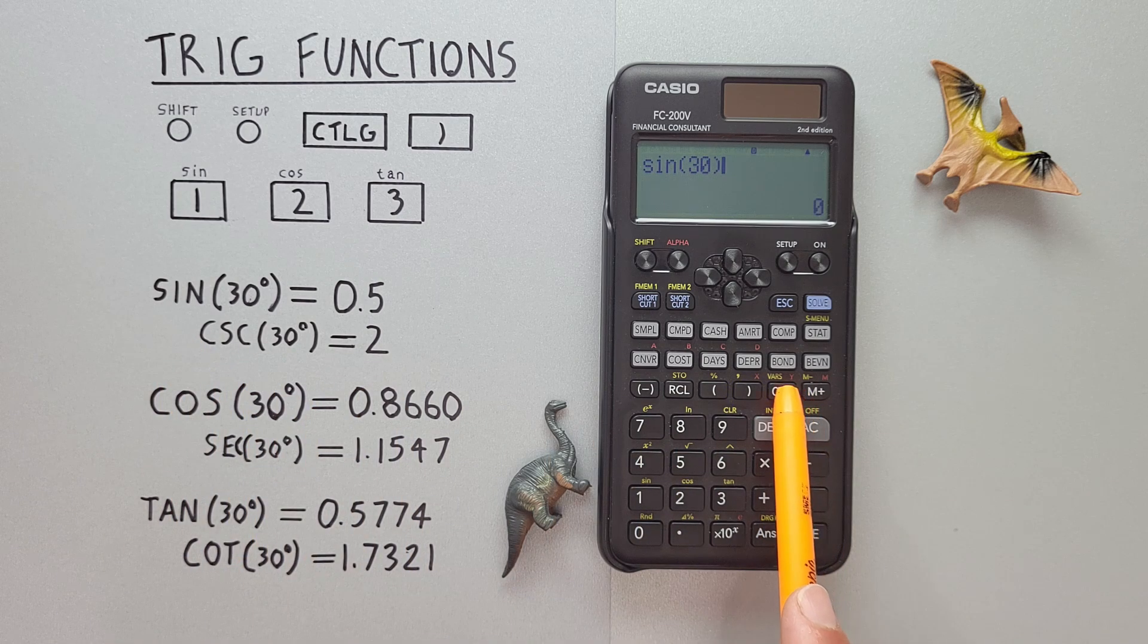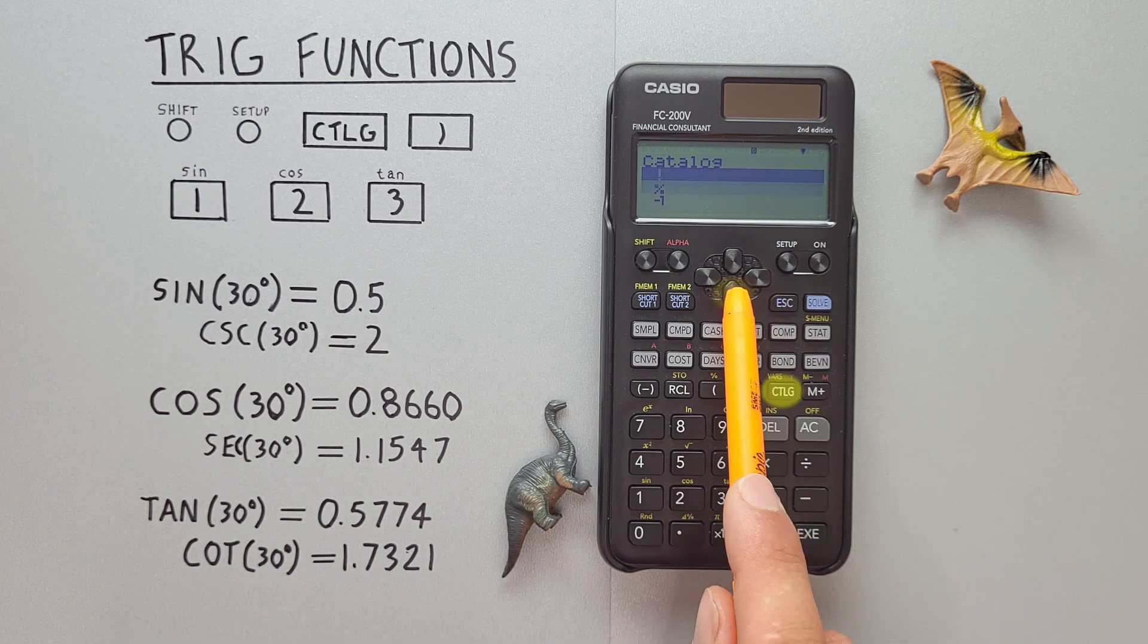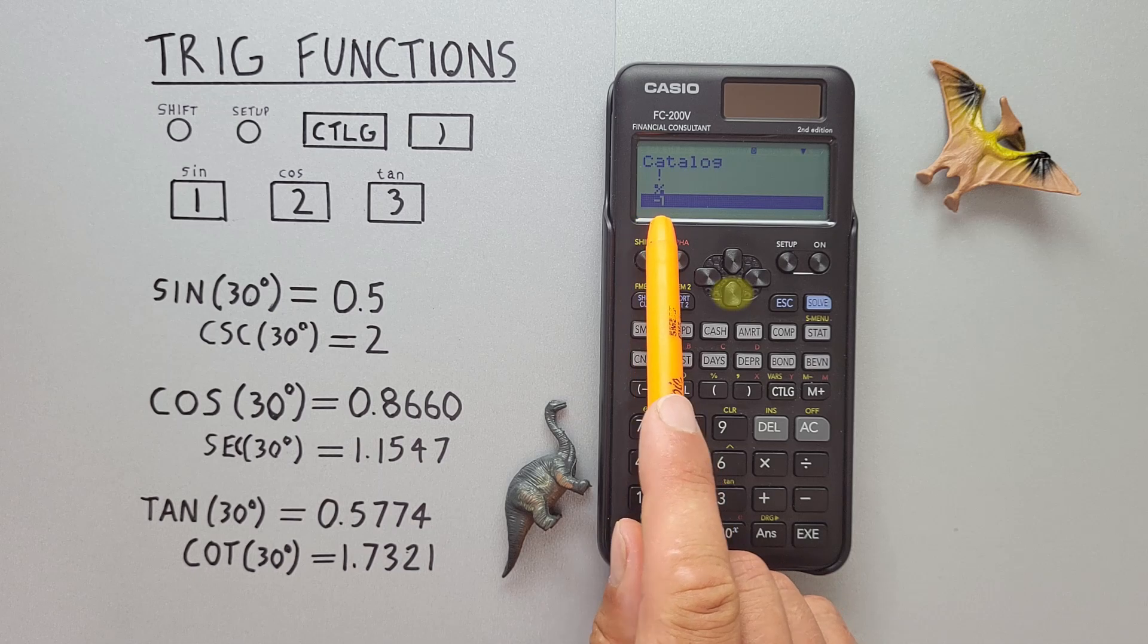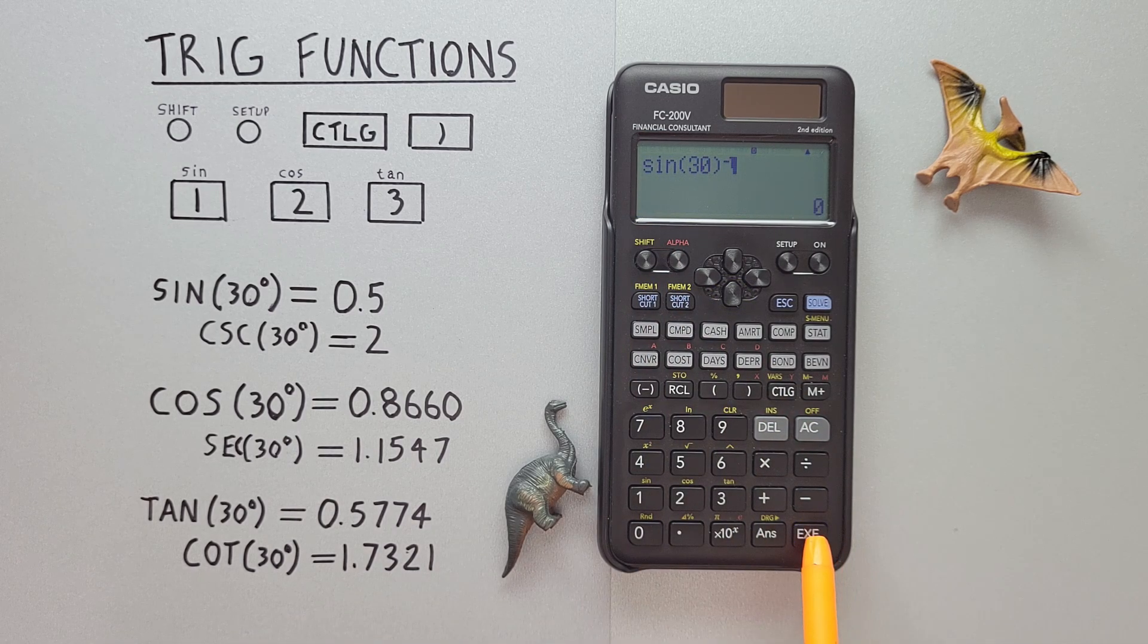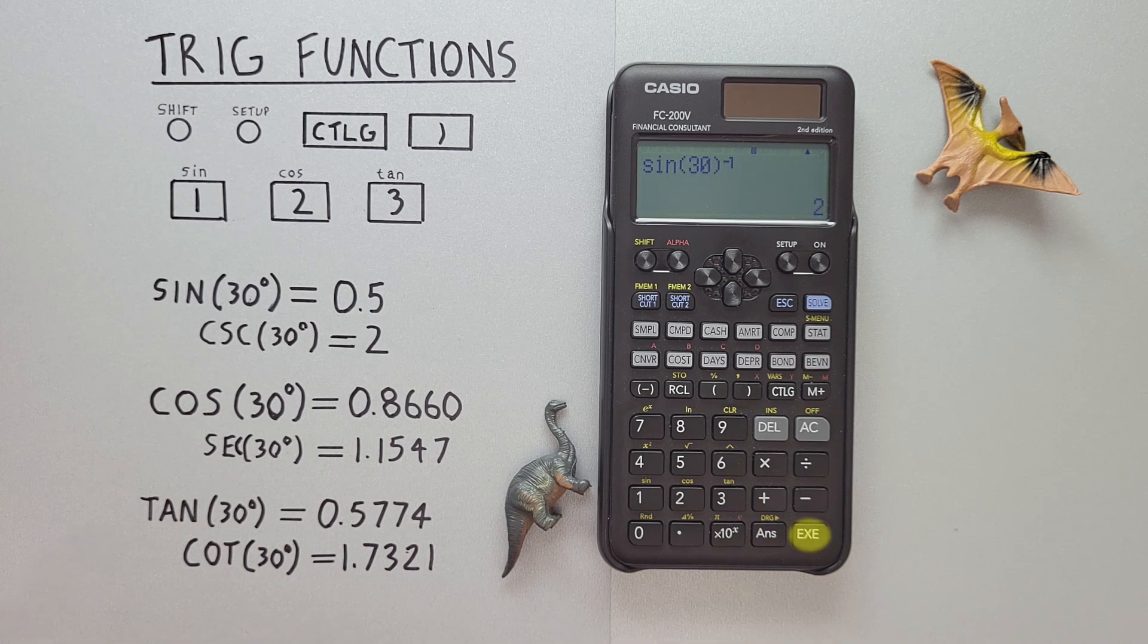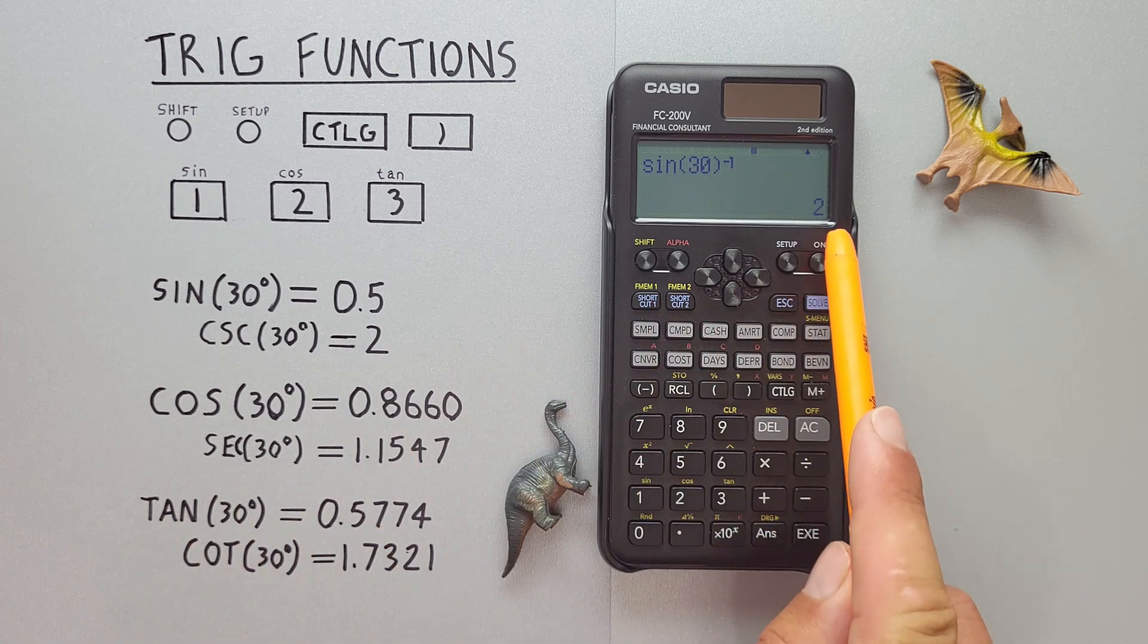So we go to the catalog, scroll down to the minus one, and select that. And hit exe. And there we go. The inverse of sine 30, or the cosecant of 30 degrees, is equal to two.